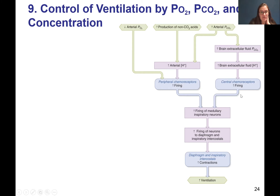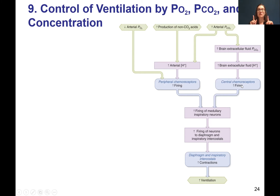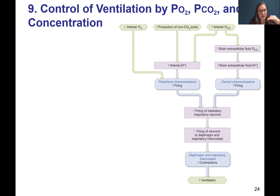On this other part of the flowchart, if we get an increase in arterial PCO2, we can get more carbon dioxide around the brain. Through the reaction with bicarbonate, we can get more hydrogen ions, and then the central chemoreceptors start firing. We have the peripheral ones, mostly located in the blood vessels, and the central ones that are actually in the brain. When those start firing, they have connections to the medullary inspiratory neurons, which will increase their firing rate, which will increase action potentials to the diaphragm and the inspiratory intercostals, producing contractions and increasing ventilation.